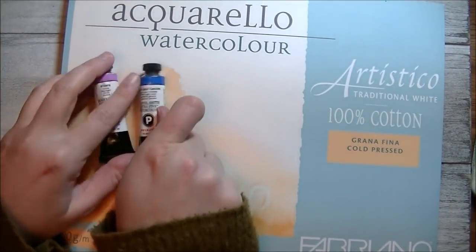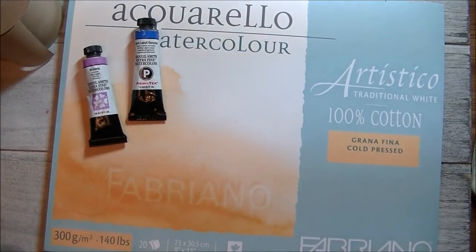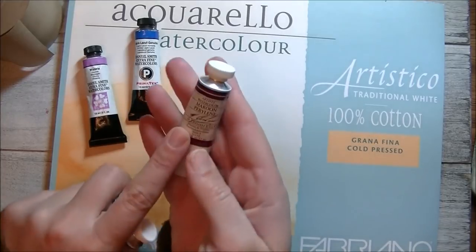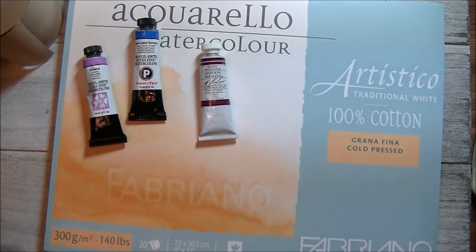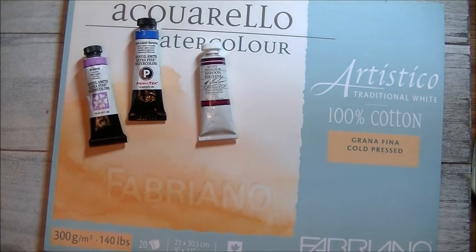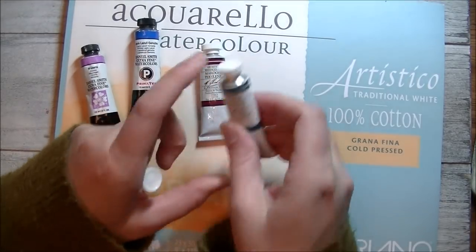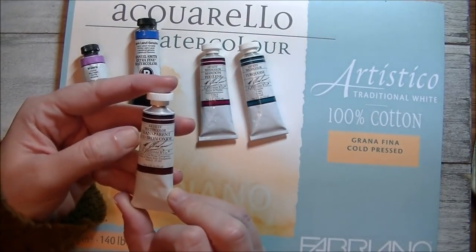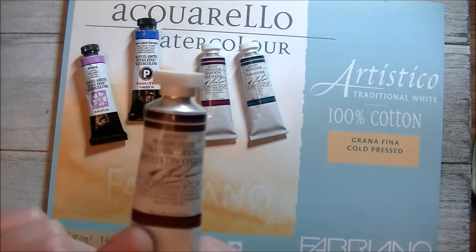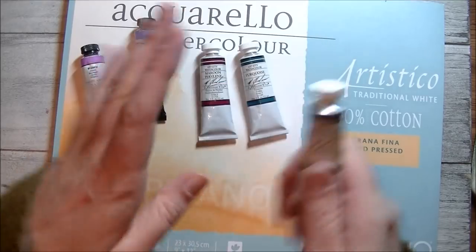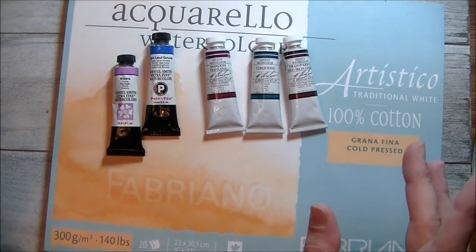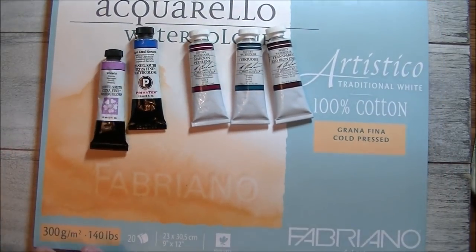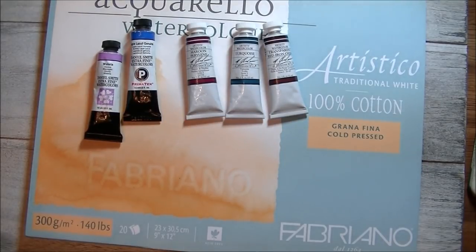And I got three tubes of watercolor. I was very well behaved all things considered. These are M Graham. So I picked up maroon perylene, which is a beautiful blood red color. I picked up turquoise and I picked up transparent red iron oxide and this color is stunning too. I really, really love this color. That brings my total of M Graham paints up to like seven tubes of them, but I not like I need any more paint.